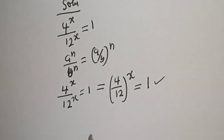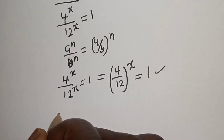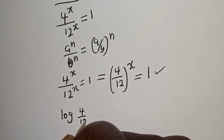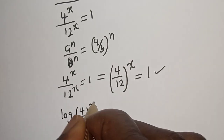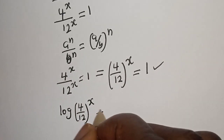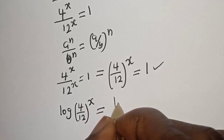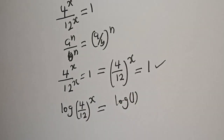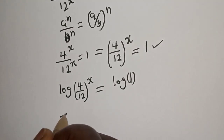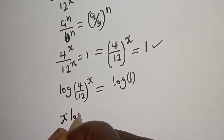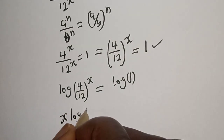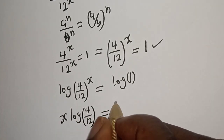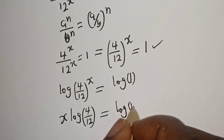Let's take the log of both sides. Log of 4 over 12 raised to power s is equal to log 1. Bringing the exponent down: s times log of 4 over 12 is equal to log 1.